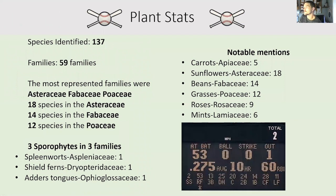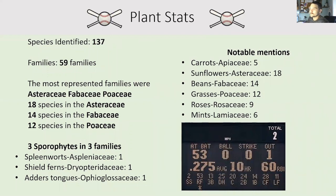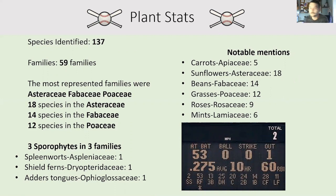Plant stats from the day: overall there were 137 species identified in 59 families. The most represented ones were the Asteraceae, Fabaceae or bean family, and Poaceae or grass family. Sporophyte diversity was quite a bit lower than our time at Panther Den — we had one species each in the spleenworts, shield ferns, and adder's tongues families. Notable mentions were carrots represented by five species, roses and mints with nine and six respectively. A pretty good slate of species, and the fun thing about glades is it's a different suite of species.